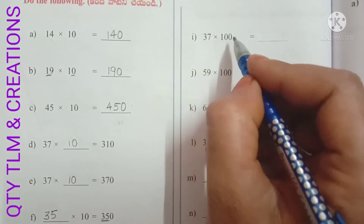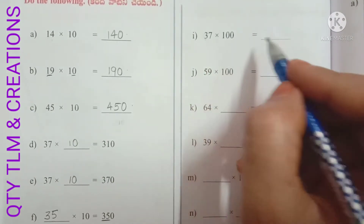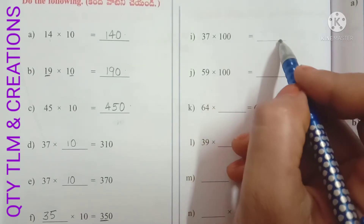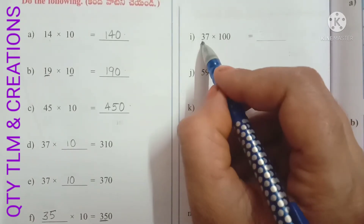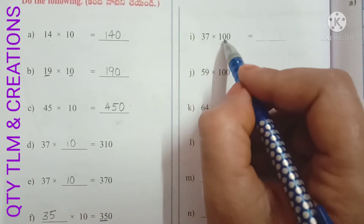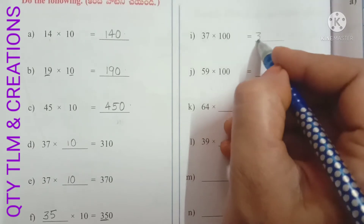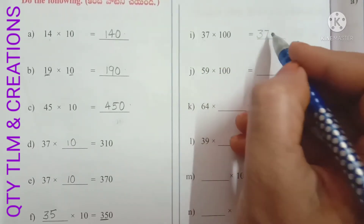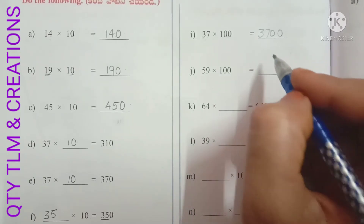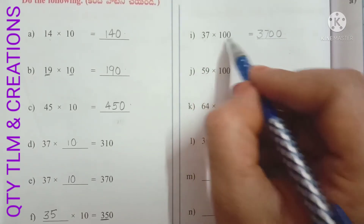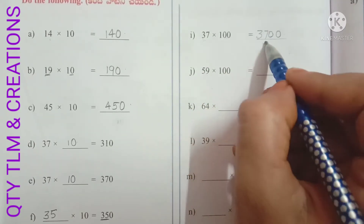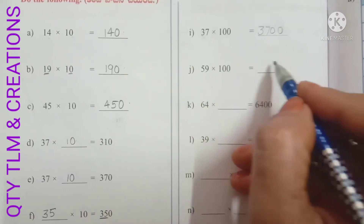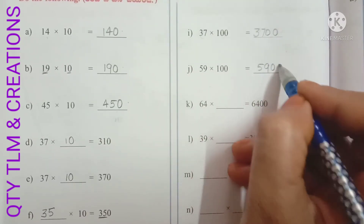Next I: 37 into 100. When we multiply a number by 100, the product comes out to be the multiplicand followed by two zeros. So we write 37 followed by two zeros: 37 into 100 equals 3700. Next J: 59 into 100 equals 5900.